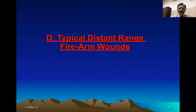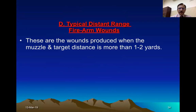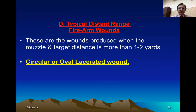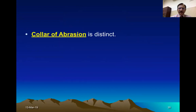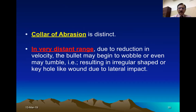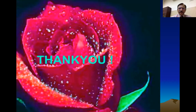Typical distant range firearm wounds are produced when the muzzle and target distance is beyond one to two yards. A circular or oval lacerated wound will be seen, with inverted margins, and collar of abrasion is distinct. In very distant range when there is a reduction in velocity, the bullet may wobble or tumble, and an irregular or bizarre-shaped entry wound can appear. Whereas at typical distant range, it will be a circular, oval lacerated wound with inverted margins and collar of abrasion.